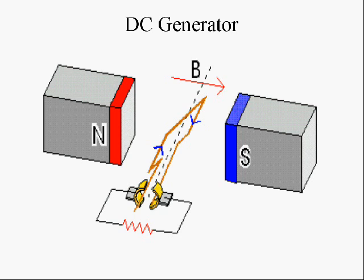If we need DC, we can use what's called a commutator, which is like a ring, but it's split in half. And that allows you to pick up the current with brushes also. But the split commutator switches the direction of connections to the brushes so that even though the current reverses in the loop of wire, as it does in an AC generator, by using the commutator, the connection is reversed each time.